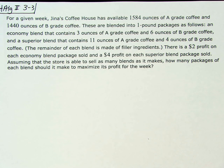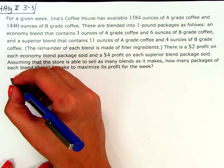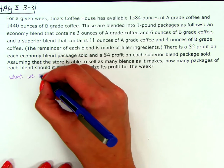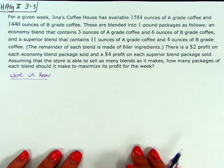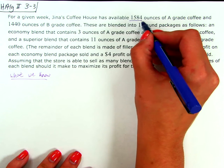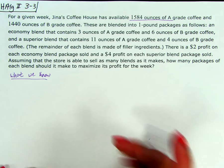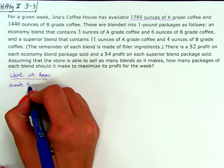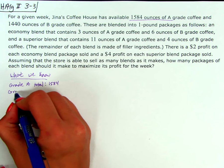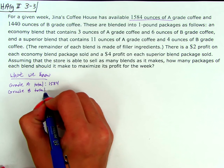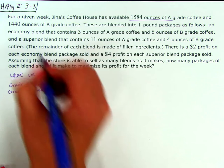Approaching this problem, we're going to start writing down the things that we know and then work on writing our system of constraints. So for a given week, we have a total available of 1,584 ounces of grade A — so grade A total: 1,584. And then we also have a total for grade B of 1,440.